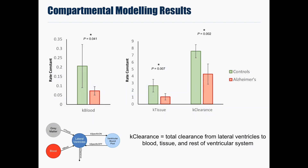Results from our complemental modeling analysis show significantly reduced rates of signal from the blood and the surrounding brain tissue to the lateral ventricles in Alzheimer's disease compared to controls. Our results also show a reduced rate of clearance from the lateral ventricles to the surrounding tissues and ventricular system in Alzheimer's disease.